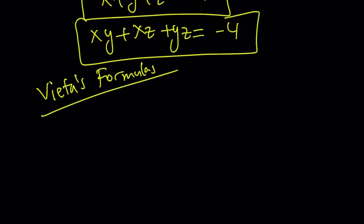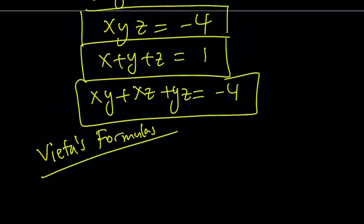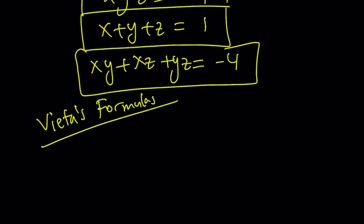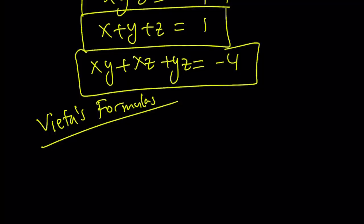And so Vieta's formulas basically tells us if you know the sum, the product, and the sum of the two-way products, then you can write the equation. So suppose we have an equation. Let's use a different variable, something different from x, y, z.